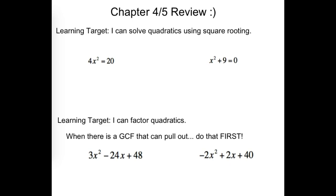What would we have to do first? If we divide by 4, what do we end up with? We get x squared being 5. Is that a nice perfect one? No. But we can still square root it. If we square root that, we've got x being plus or minus the square root of 5.